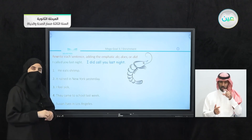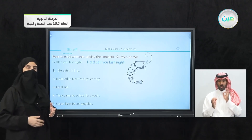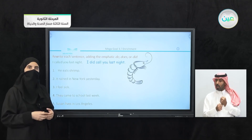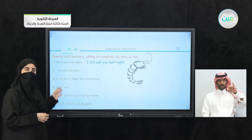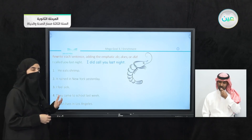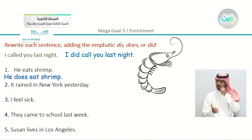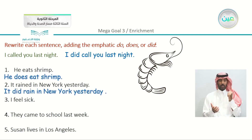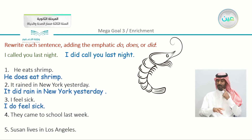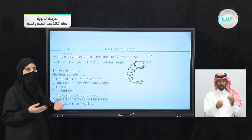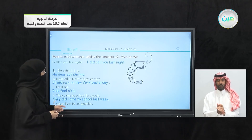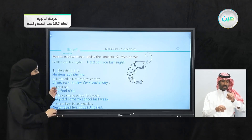Now we focus on emphatic do. Remember, 'do' can emphasize a sentence using do, does, or did in the present or past. 'He eats shrimp' — present with S — becomes 'He does eat shrimp.' 'It rained in New York yesterday' — past — becomes 'It did rain in New York.' 'I feel sick' — 'I do feel sick.' 'They came to school last week' — 'They did come.' Don't forget to change the verb back to the base form. 'Suzanne lives in Los Angeles' — 'She does live in Los Angeles.'